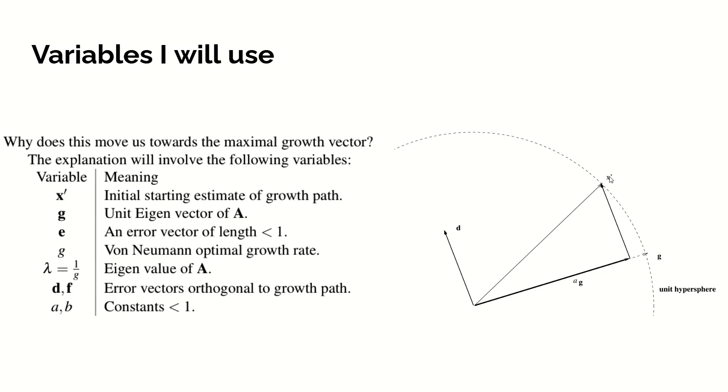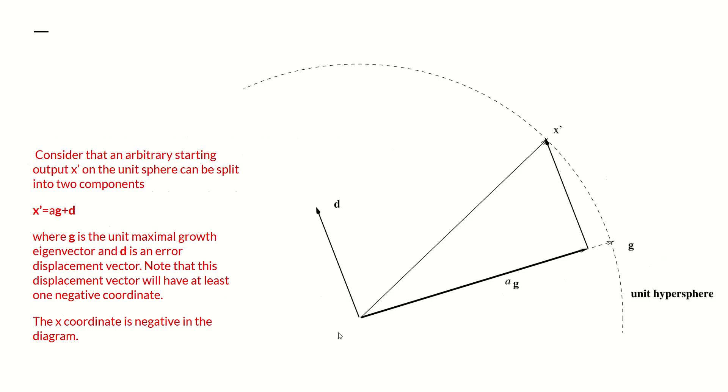In going through this, I'm going to have the following variables. X prime is our initial starting estimate of the growth path. G is our unit eigenvector. E is an error vector of length less than one. G, the small g is the von Neumann optimal growth rate, which is the lambda, the eigenvalue is one upon G. D and F are unit vectors orthogonal to the growth path, and A and B are some constants less than one. So I'll go through the proof. So consider an arbitrary starting vector. As I say, we can split it into two components. Component A along direction G, and a component at right angles D, which is the error or displacement vector.